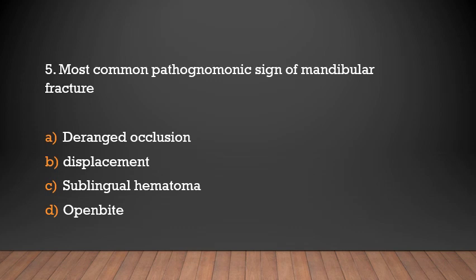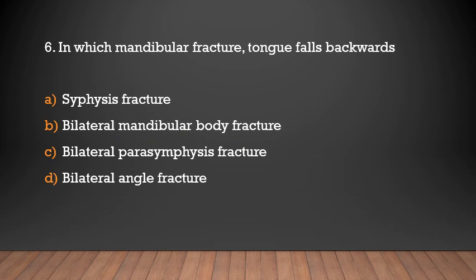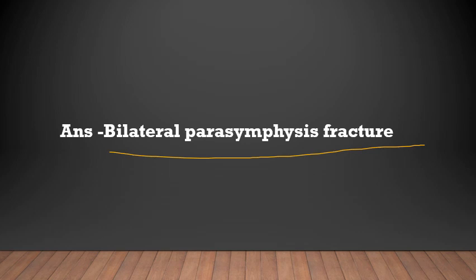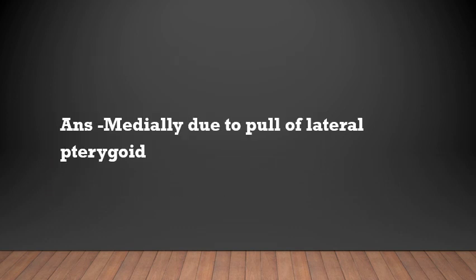Most common pathognomonic sign of mandibular fracture — in which mandibular fracture does the tongue fall backward? The answer is bilateral fracture. In bilateral fracture, the tongue falls backward, and the condyle is displaced medially due to the pull of the lateral pterygoid.